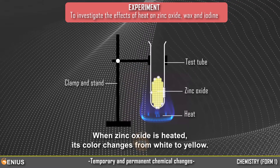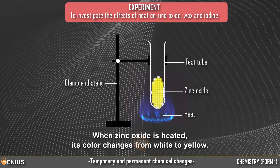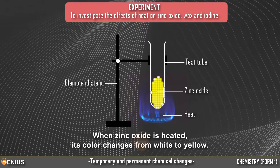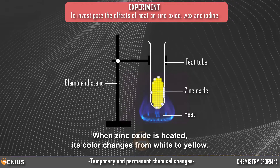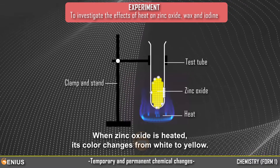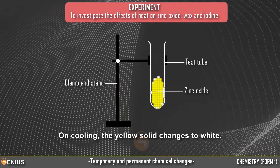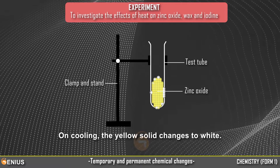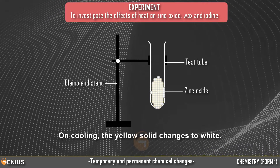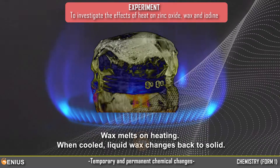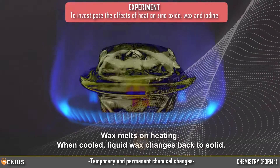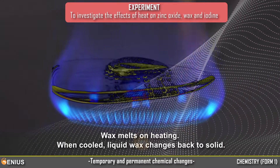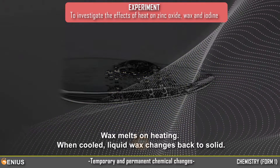When Zinc Oxide is heated, its color changes from white to yellow. On cooling, the yellow solid changes back to white. Wax melts on heating. When cooled, liquid wax changes back to solid.